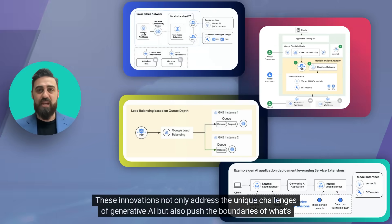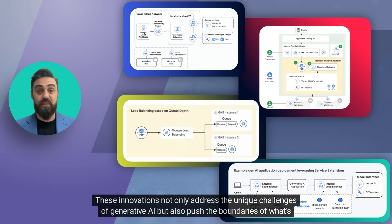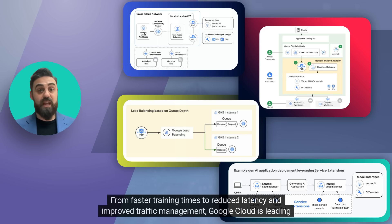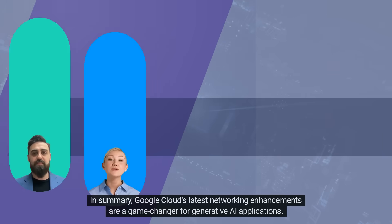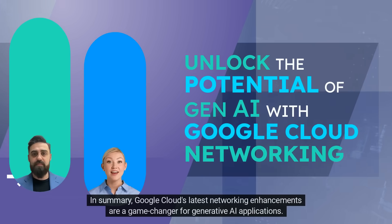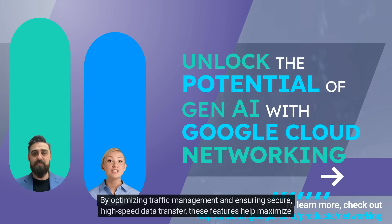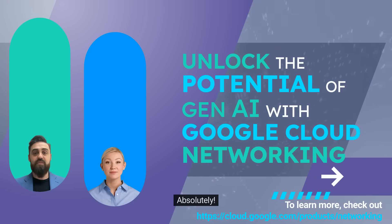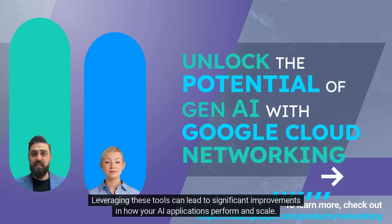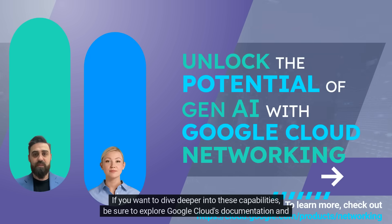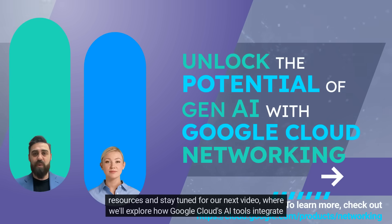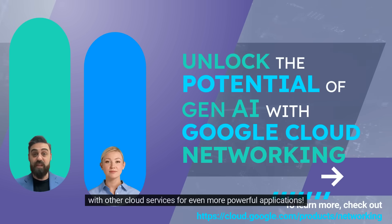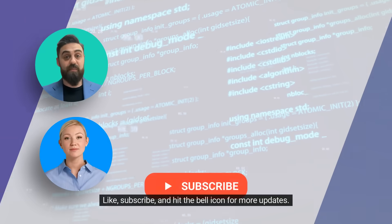These innovations not only address the unique challenges of generative AI, but also push the boundaries of what's possible with AI applications. In summary, Google Cloud's latest networking enhancements are a game-changer for generative AI applications. By optimizing traffic management and ensuring secure high-speed data transfer, these features help maximize the performance and efficiency of your AI workloads. Leveraging these tools can lead to significant improvements in how your AI applications perform and scale. If you want to dive deeper, explore Google Cloud's documentation, and stay tuned for our next video where we'll explore how Google Cloud's AI tools integrate with other cloud services. Like, subscribe, and hit the bell icon for more updates.